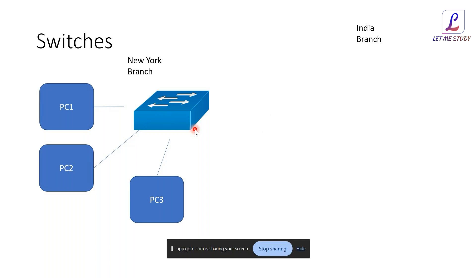A switch in its default configuration will broadcast a received packet without filtering. A router, by contrast, examines IP addresses and sends traffic only to the correct destination. We'll later cover how to configure a switch to prevent unnecessary broadcasting — for now we're discussing a normal L2 switch with default configuration.